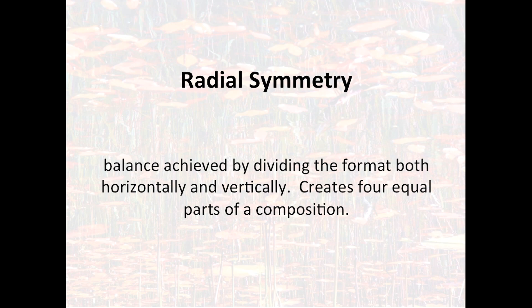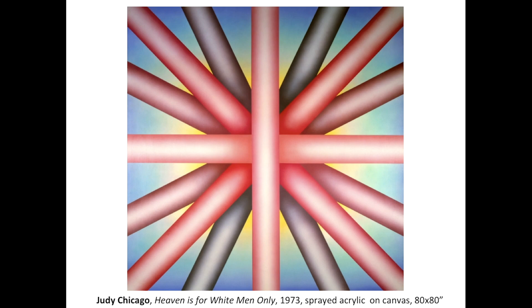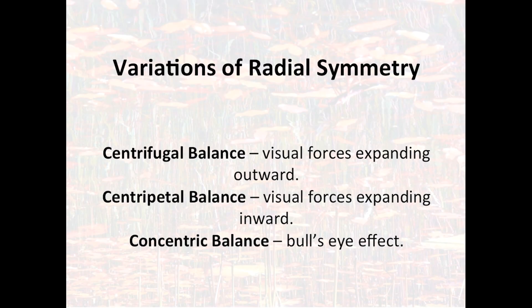One kind of symmetry is called radial symmetry — dividing the format horizontally and vertically into four equal parts rather than two. Judy Chicago's piece is a great example; you can read her title 'Heaven Is for White Men Only.' The composition radiates from the center, and if you divide the piece into four quadrants — upper left, upper right, lower left, lower right — they may not be exactly the same, but they're close enough that they function as four equal balanced parts.